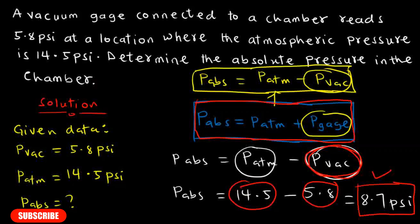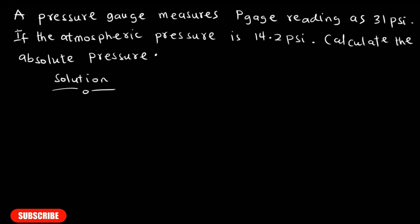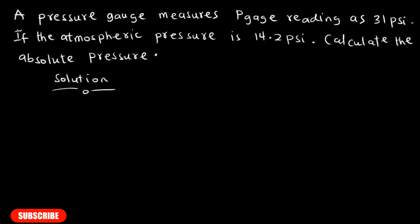Let's try another example. The question says a pressure gauge measures a reading of 31 pounds per square inch. If the atmospheric pressure is given as 14.2 psi, calculate the absolute pressure. In this question, we are given the gauge reading: P_gauge = 31 psi, and the atmospheric pressure P_atm = 14.2 psi.